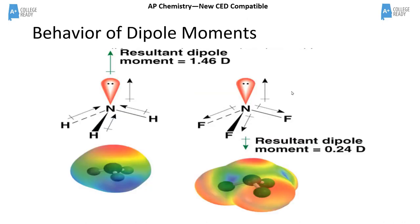In NH₃, all electrons are being drawn toward nitrogen because it's more electronegative. Since the electrons are pulled toward nitrogen and the molecule is trigonal pyramidal, this creates a negative end near the nitrogen and a positive end near the hydrogens — so NH₃ has a dipole moment. In NF₃, fluorine is more electronegative and pulls electrons toward the bottom of the molecule, creating a negative charge there.